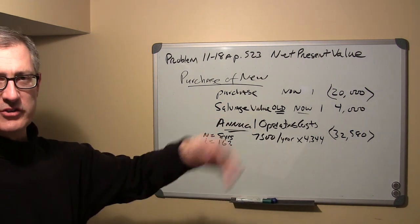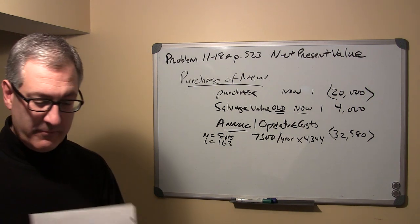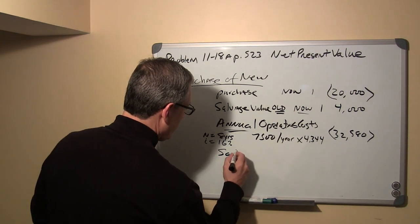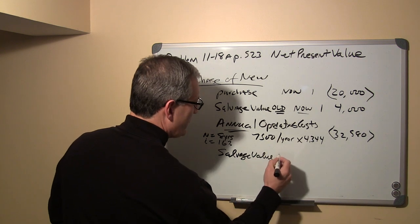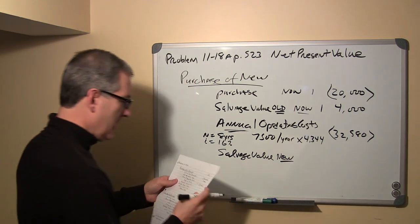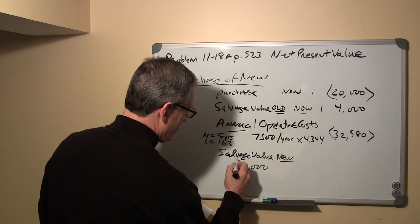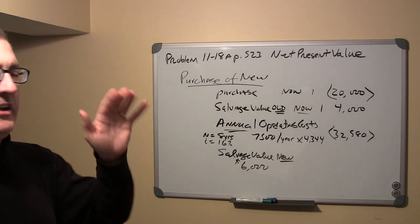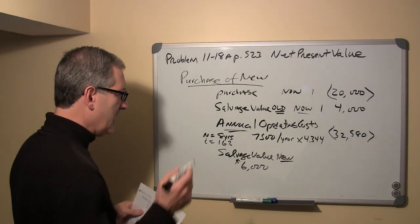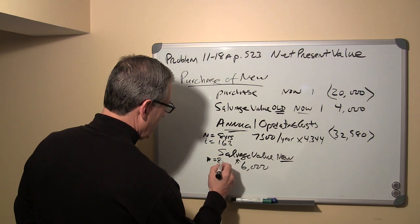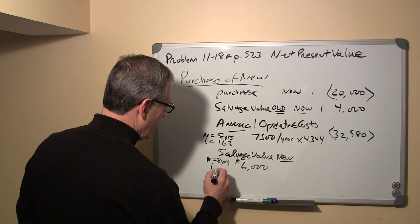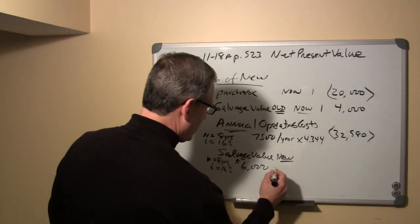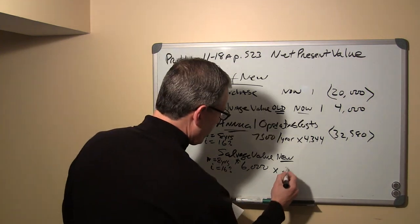When the company is done with the new generator after eight years, they'll dispose of it. That has a salvage value of six thousand dollars, but that's the future value — the amount received eight years from now. To find its present value, we use the present value of a single sum table at sixteen percent for eight periods, which gives a factor of 0.305.